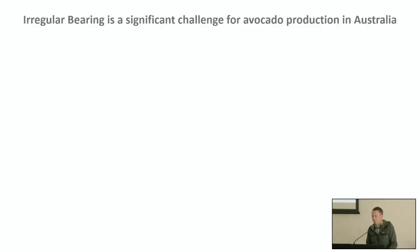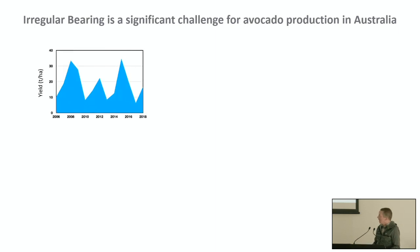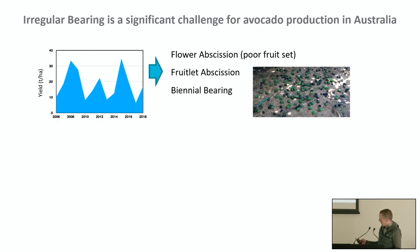Starting off with a little background: irregular bearing is a significant challenge for many growing production regions in Australia, including Western Australia. This graph illustrates how yields in tons per hectare can vary from season to season. The major drivers are flower abscission due to poor fruit set, fruit lead abscission, as well as biennial bearing.